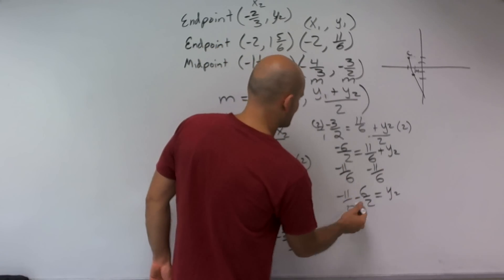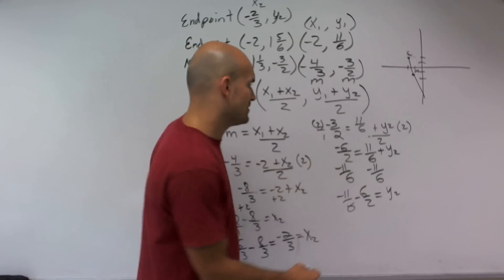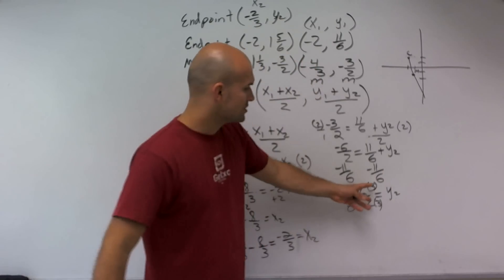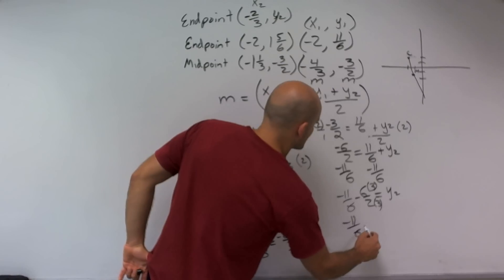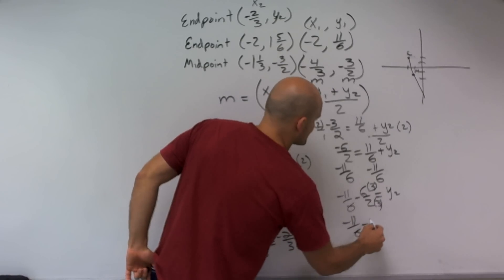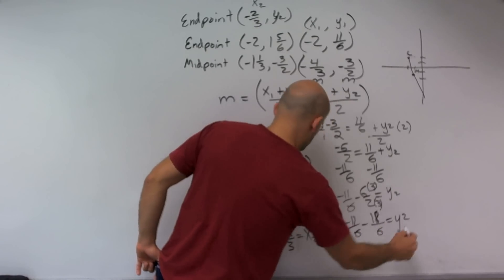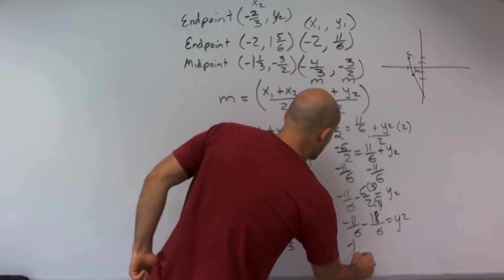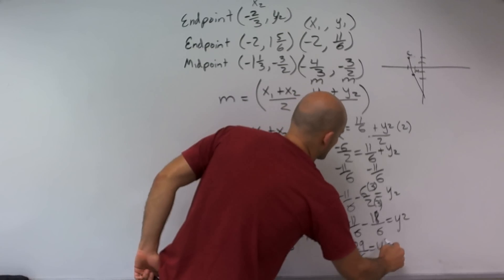So to get these to be the same denominators, I need to multiply by 3 on the numerator and the denominator. So I multiply by 3 on the numerator and denominator to get this to be 6. So therefore, I'll now have 11/6 minus 18/6, which equals y2. Well, negative 11 minus 18 is negative 29/6, which equals y2.